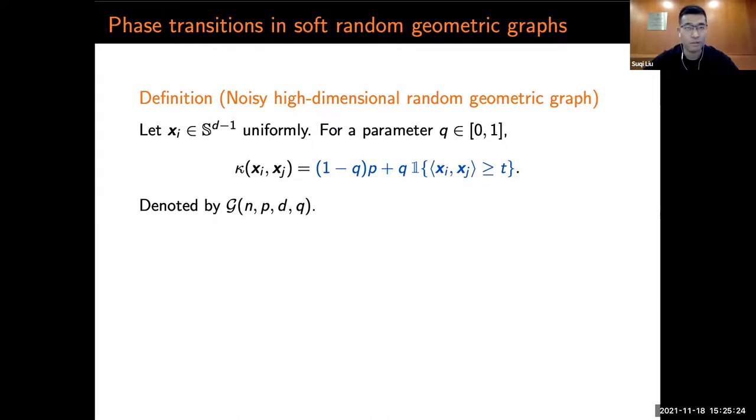So we try to answer this question using two different models. In recent work, we consider this noisy high-dimensional random geometric graph. The connection function is defined by a convex combination of a constant and the threshold function. We have a parameter Q, which controls the dependency over the underlying positions.